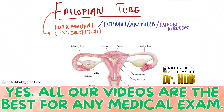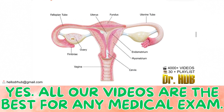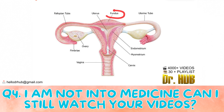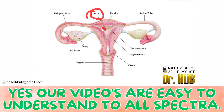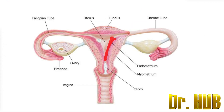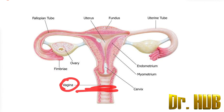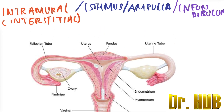Now let's look at what is present in each part. Looking at the diagram of the fallopian tube, we can identify the fallopian tube, the fundus, uterus, uterine tube, endometrium, myometrium, cervix, ovary, the finger-like projections of fimbria, and the vagina.